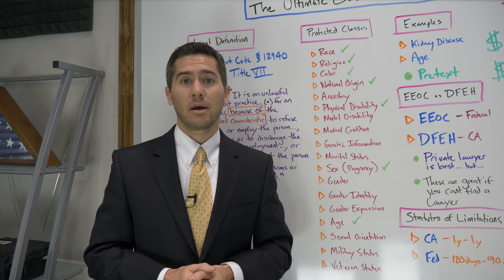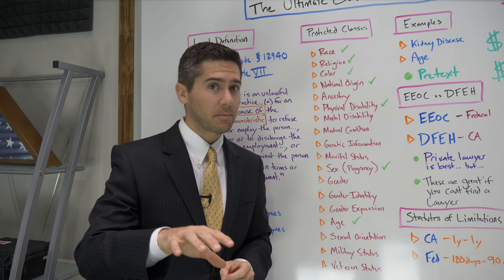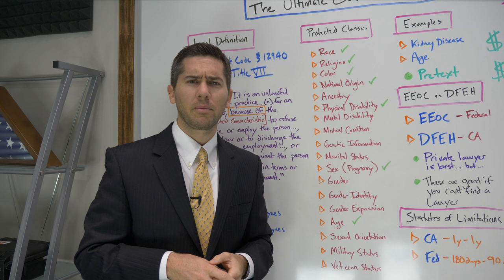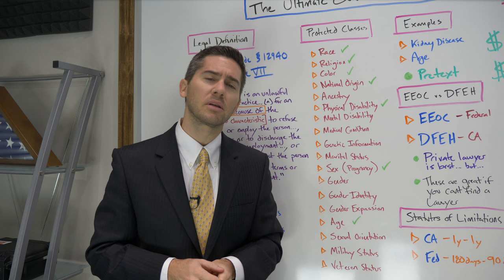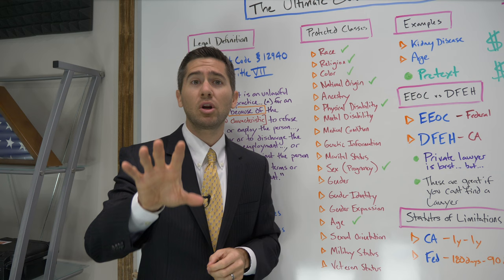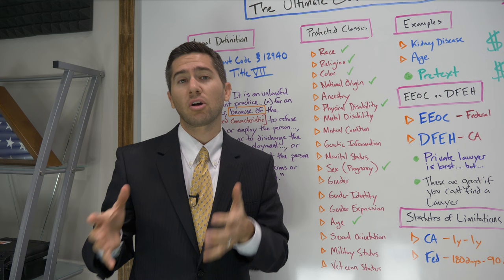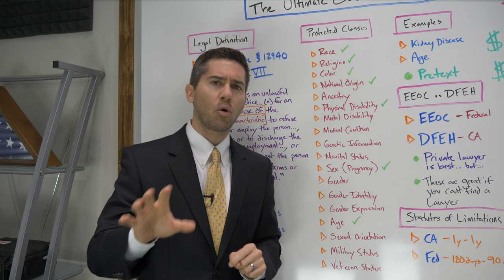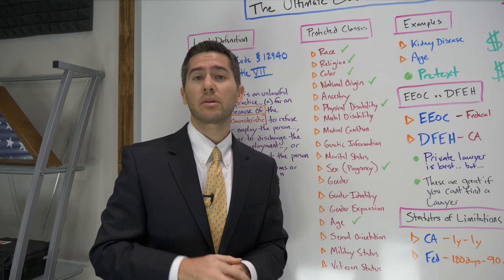Now, these are the California protected categories. The federal anti-discrimination Title VII law only protects against race, religion, color, national origin, disability, sex, and age. The Age Discrimination in Employment Act and the ADA, which protects against disability, are separate laws. Now, each of these categories has a specific legal definition. So if you want to know if the discrimination you are facing falls into one of these categories, you actually need to call a lawyer. I've also made specific discrimination videos on race, disability, pregnancy, gender, age, and sexual orientation — links are in the description below.